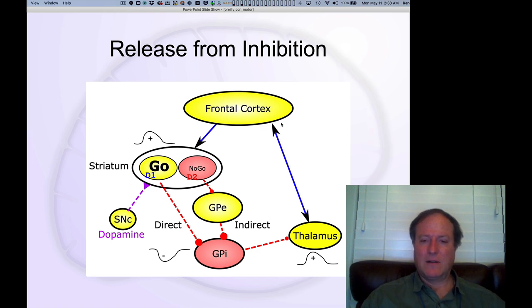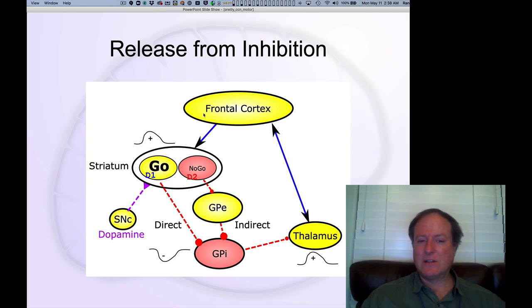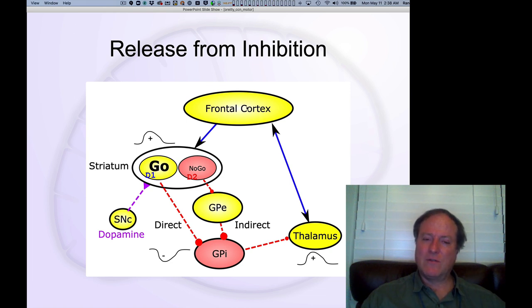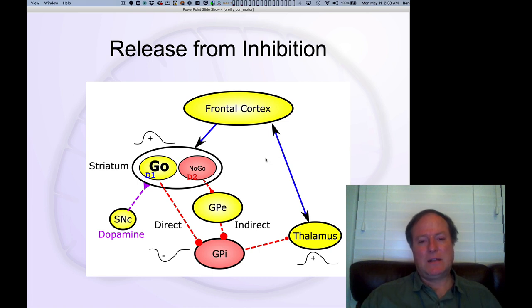If you remember back in our networks chapter, those thalamocortical connections are in the deep layers of the frontal cortex. The net effect of this is transitioning from more superficial layer activity — around layer three — in frontal cortex, to activation of the deep layers when this basal ganglia circuit is completed.